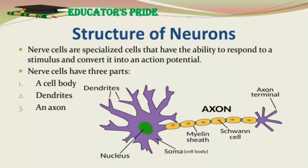Now, the structure of neurons. Before understanding membrane potential, I will give a brief introduction on the structure of nerve cells. Nerve cells are specialized cells that have the ability to respond to a stimulus and convert it into an action potential.